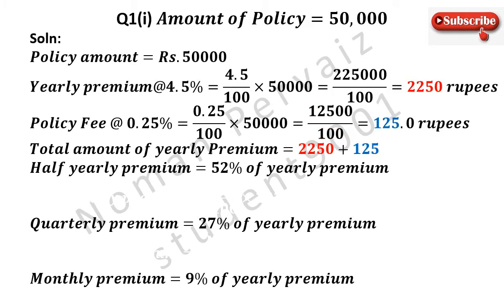Here we need to calculate total amount of yearly premium, which is equal to yearly premium plus policy fee. So we write 2250 which is yearly premium plus 125 which is policy fee. 2250 plus 125 becomes 2375 rupees.